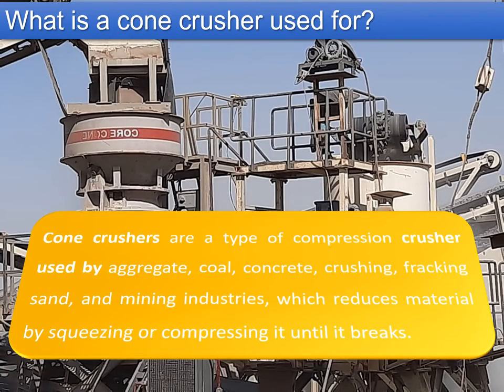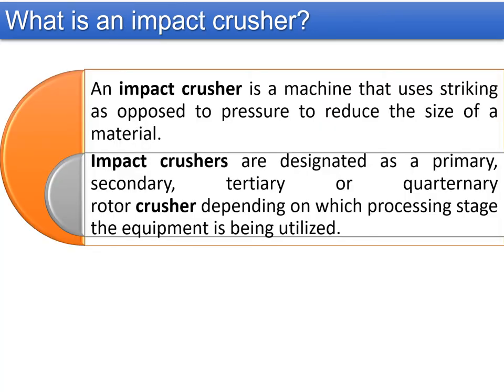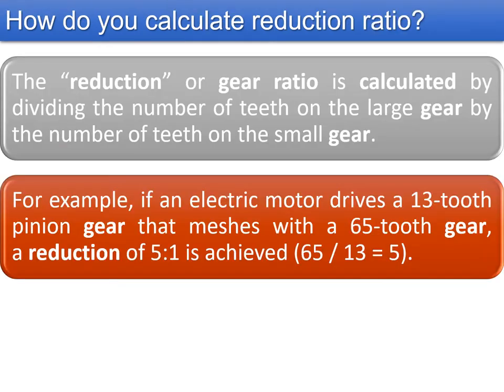Cone crushers are a type of compression crusher used in aggregate, coal, concrete crushing, fracking sands, and mining industries, reducing materials by squeezing or compressing until they break. An impact crusher, or VSI, is a machine that uses striking as opposed to pressure to reduce the size of a material. Impact crushers are designed as primary, secondary, tertiary, or quaternary rotor crushers depending on which processing stage the equipment is being utilized.